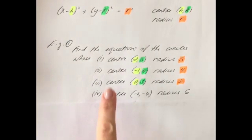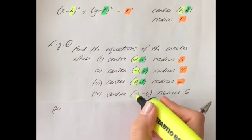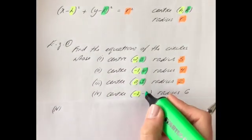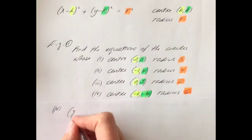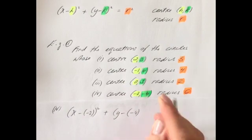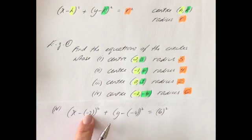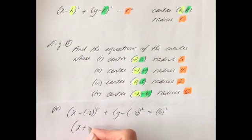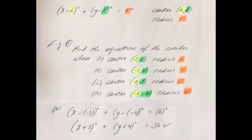Find the equation of the circle whose center is (−2, −4) and radius 6. So h = −2, k = −4, radius = 6. Substituting: x minus (−2) all squared + y minus (−4) all squared = 6². Simplifying, x minus minus 2 becomes (x + 2), and y minus minus 4 becomes (y + 4), giving (x + 2)² + (y + 4)² = 36.